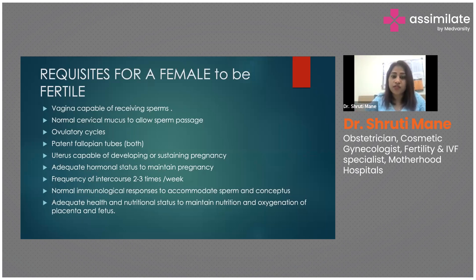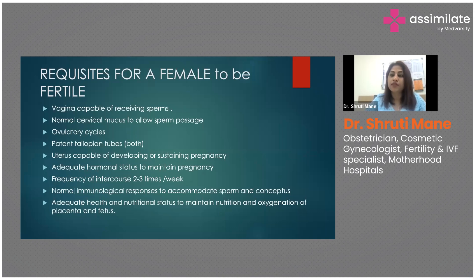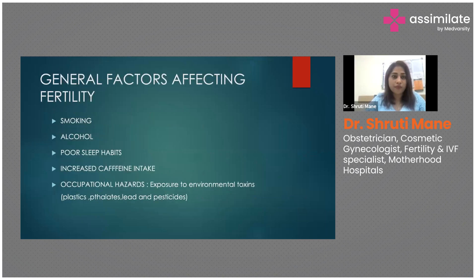Frequency of intercourse should be two to three times per week. Normal immunological responses are needed to accommodate sperm and the conceptus. Adequate health and nutritional status is also important to maintain nutrition and oxygenation of the placenta and fetus — the female should not be underweight, malnourished, or overweight, as anything beyond normal will cause complications in pregnancy.